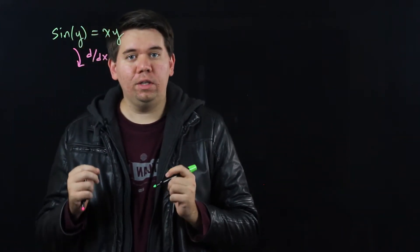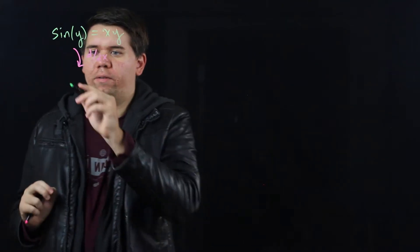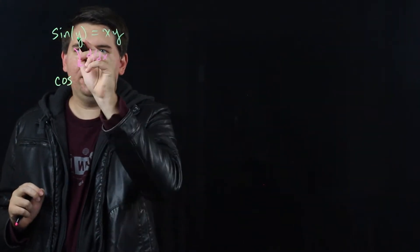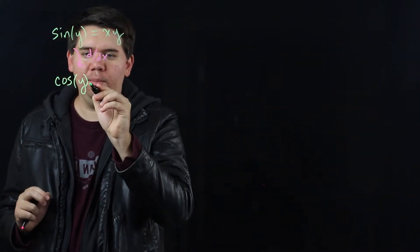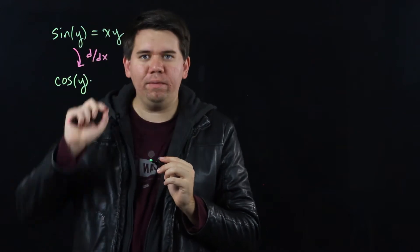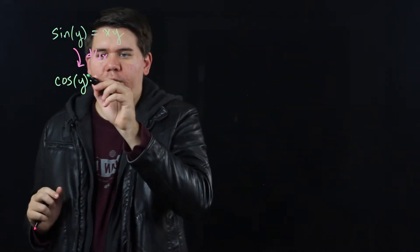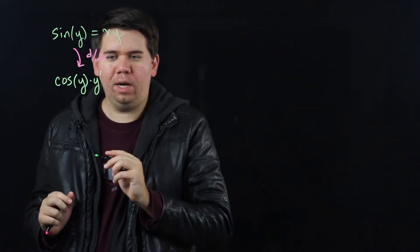For the left hand side we're going to need to use the chain rule. The derivative of sine is cosine and we'll leave that inside function y the same, but times it by the derivative of the inside function, the derivative of y, which we're denoting y prime.